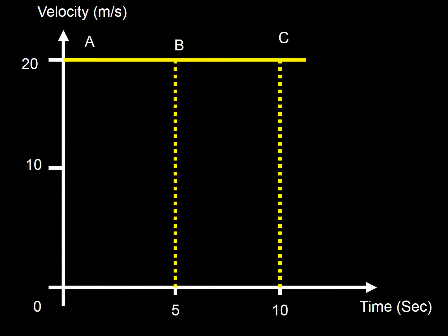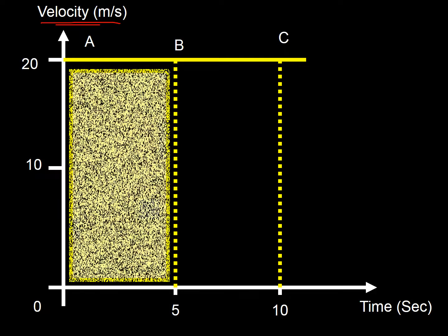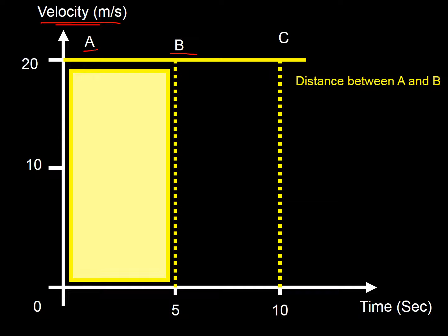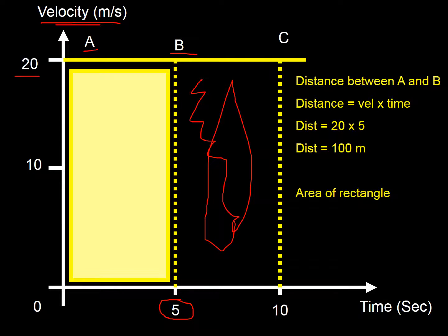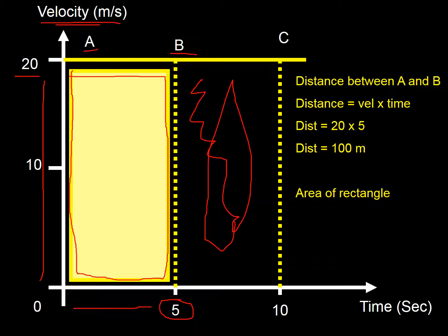Something else you can show on a velocity-time graph is the distance traveled. You work this out using the area under the graph. Looking at the section between points A and B: distance equals velocity times time, so 20 times 5 gives 100 meters. You can see this section is a rectangle with sides of 5 and 20, so the area of the rectangle equals the distance traveled. That's really useful.